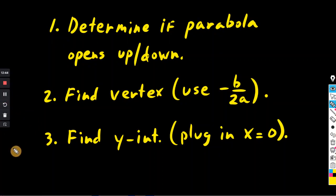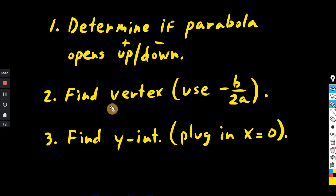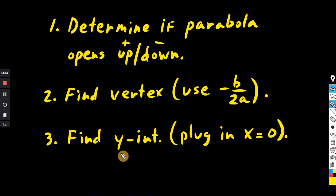To sum it up in three basic steps: first, determine if the parabola opens up or down — if a is positive it opens up, if a is negative it opens down. Step two, find the vertex using negative b over 2a for the x-coordinate, then plug it in to get the y-coordinate. Step three, find the y-intercept by plugging in x equals zero — that is your other point where it crosses the y-axis.